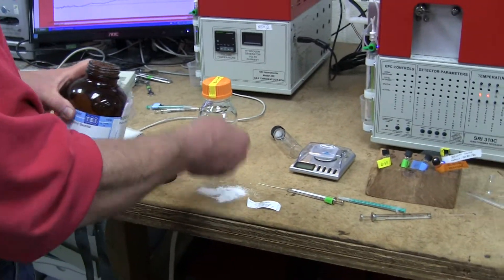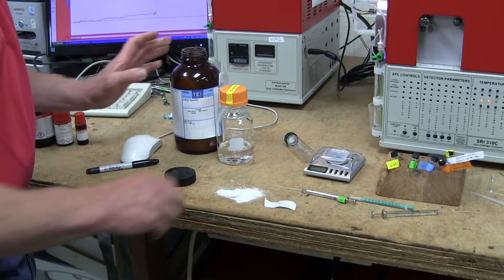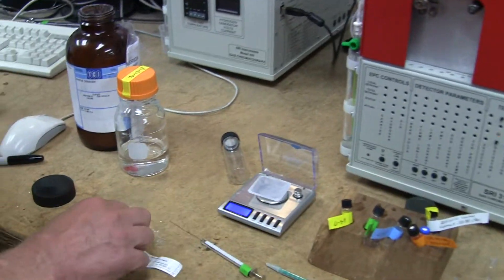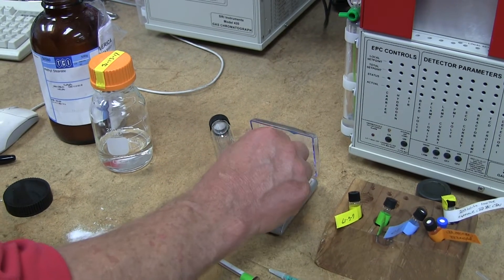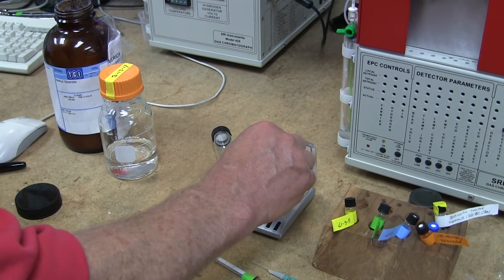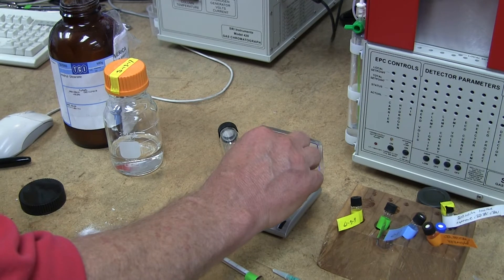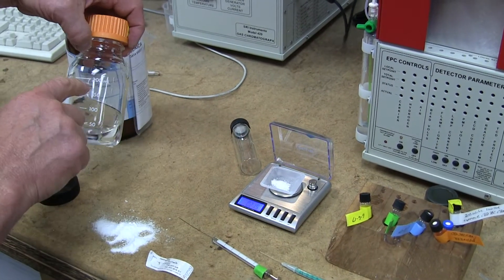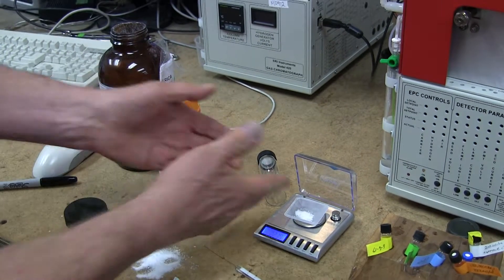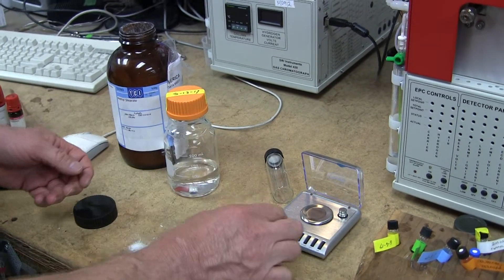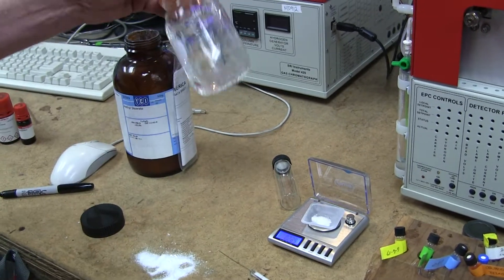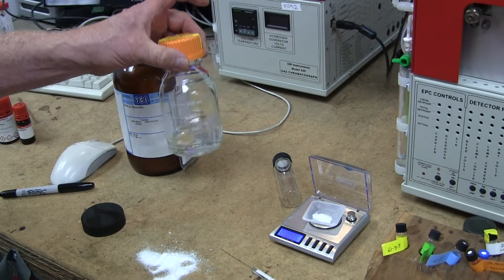And what we did was we took a little balance, and we weighed out one gram per gallon, which works out to 264 milligrams per liter. Now, we didn't make a full liter. We only made 200 milligrams. So we did the math, and we put in the correct amount of methyl stearate into the powder, and then let it dissolve. So this is what we call our internal standard solution.